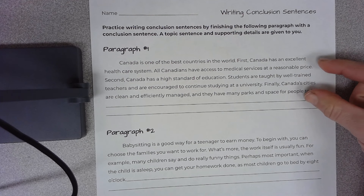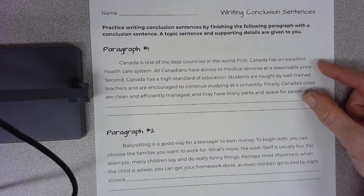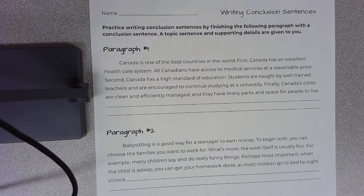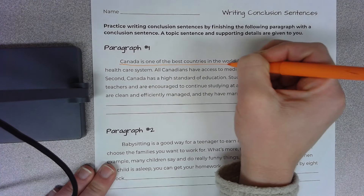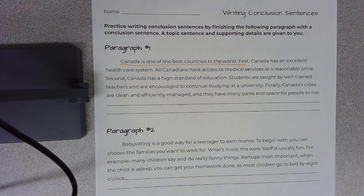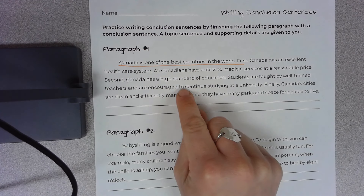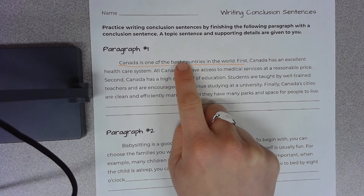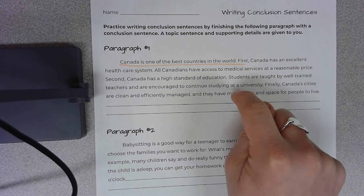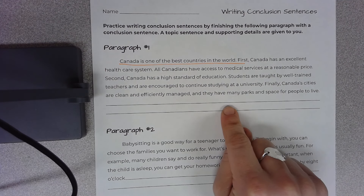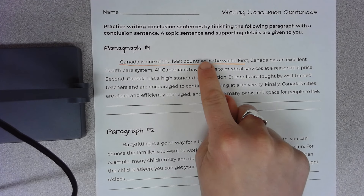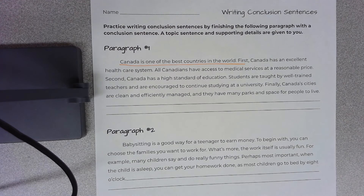Now you're going to read through each paragraph and figure out what the main idea of the paragraph is. If you look at the topic sentence — I'm just going to underline it here — 'Canada is one of the best countries in the world.' You can realize that the paragraph is going to be about why Canada is one of the best countries in the world, and your supporting details are going to give you reasons why. So your conclusion sentence should probably say something like 'this is why Canada is considered one of the best countries in the world.'